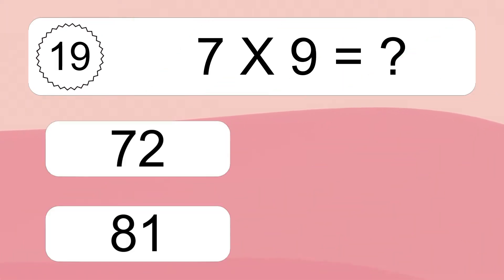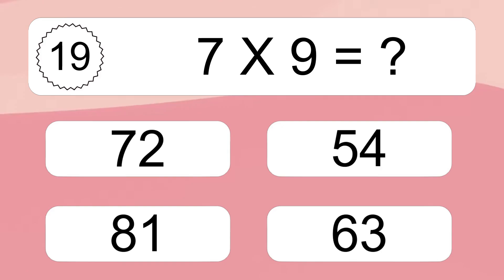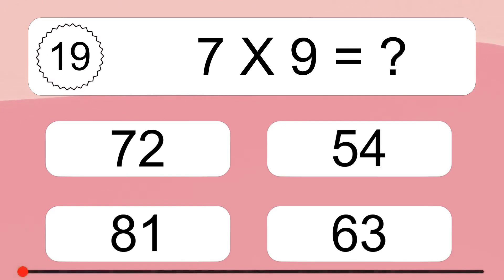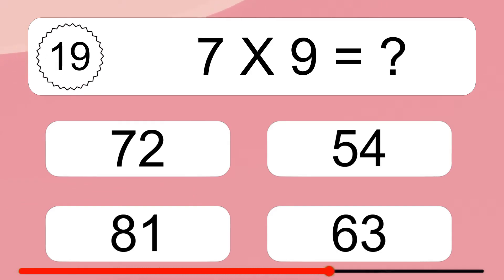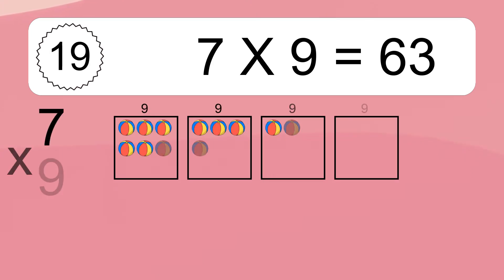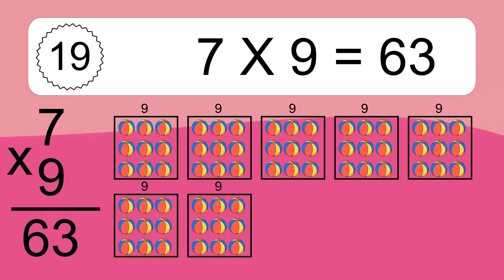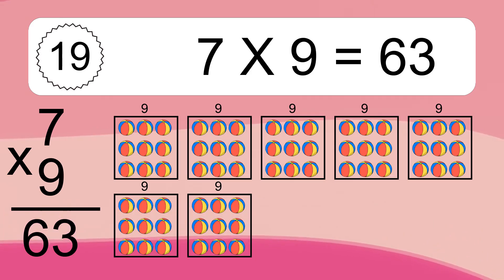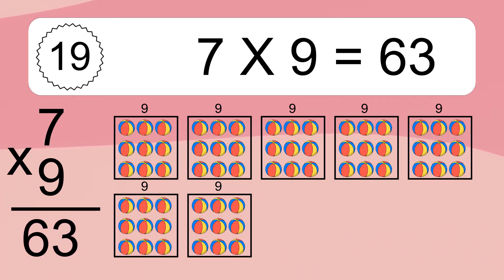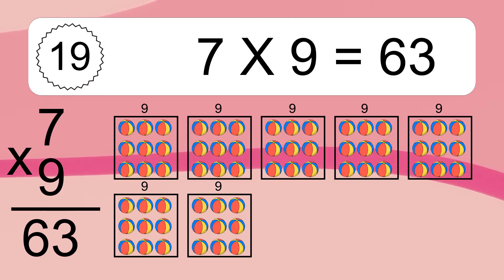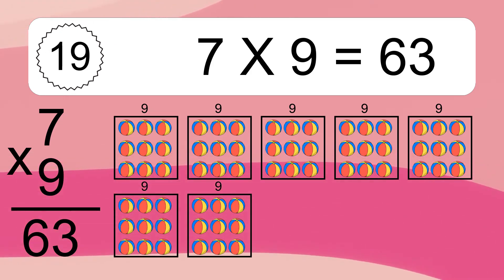7 times 9 equals what? 7 times 9 equals 63. We have 7 boxes and each box has 9 colorful balls inside. If you count all the balls in all the boxes together, you will have 7 times 9 balls. This equals 63 balls.